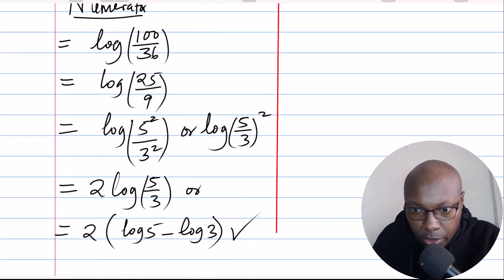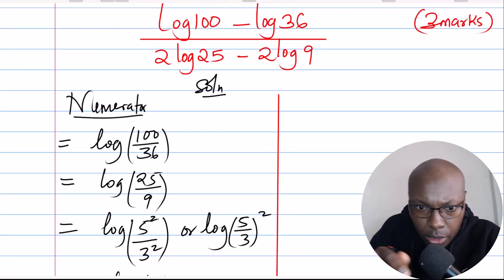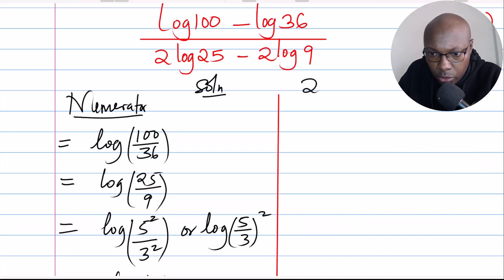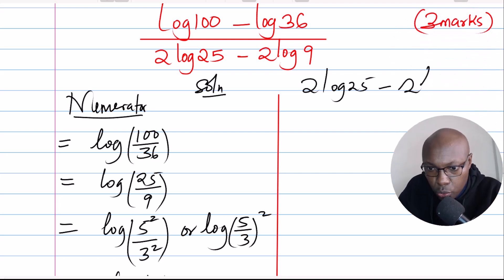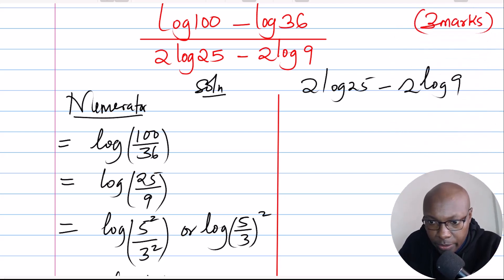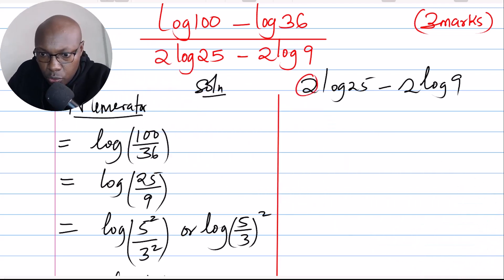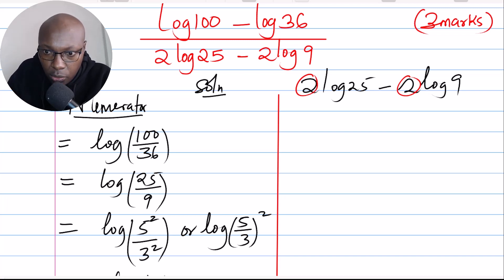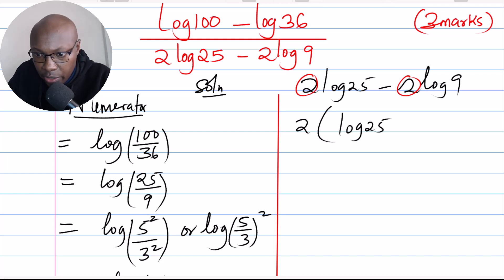Now for the denominator, we have 2 log of 25 minus 2 log of 9. The first thing to notice is that 2 is common to both terms, so factor it out. You have 2 into brackets, with log of 25 minus log of 9 remaining inside.